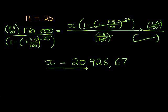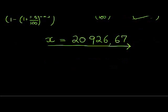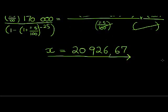20,926.67, that's how much she must pay back annually, in order to pay back 170,000 Rand over 20 years. Just for interest sake, how much will she pay back in total?